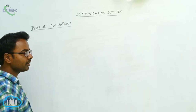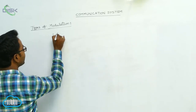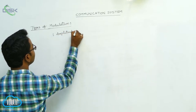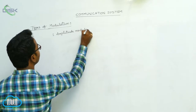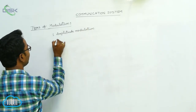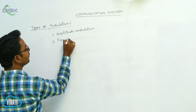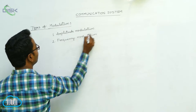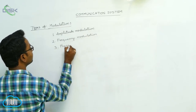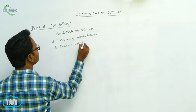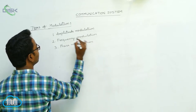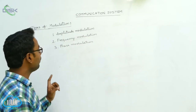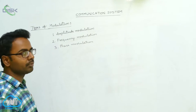Types of modulation. Basically there are three types of modulation. The first one is amplitude modulation, second one is frequency modulation, and third one is phase modulation. Here we are having the three types of modulation process: amplitude modulation, frequency modulation, and phase modulation.